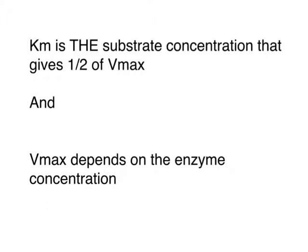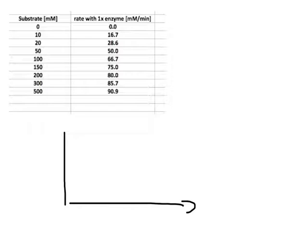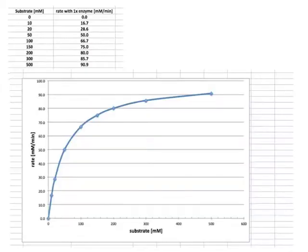What I want you to do is look at some typical enzyme data. Here are the data from an experiment — we had different substrate concentrations and measured the corresponding rate with a given concentration of enzyme. I want you to stop the video and draw a typical Michaelis-Menten plot with these data, where you plot substrate concentration versus rate. You can do that on graph paper or in Excel, but please make sure you label your axes properly.